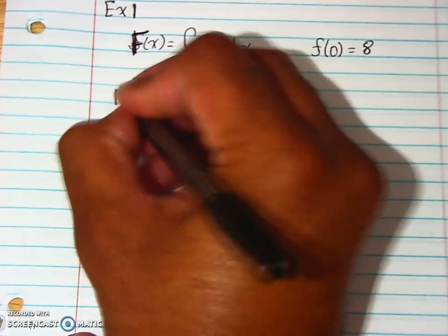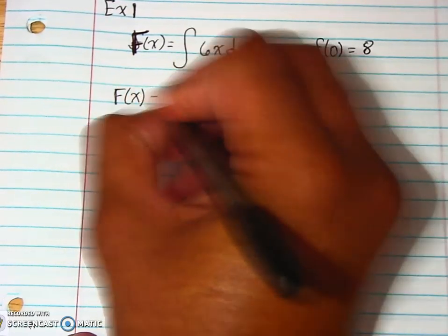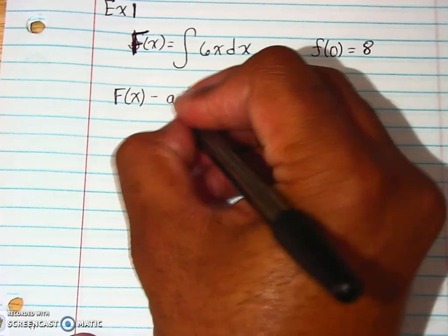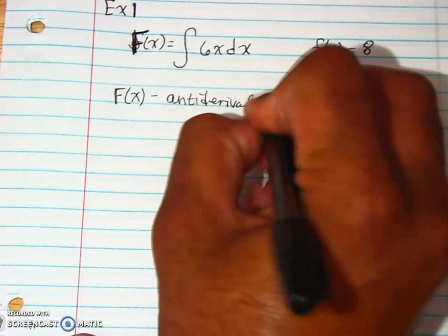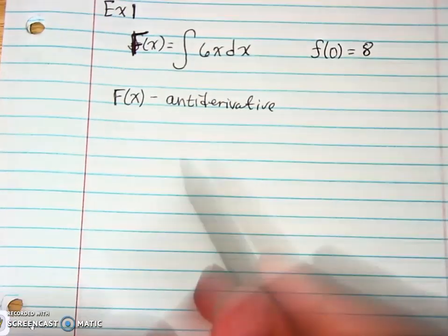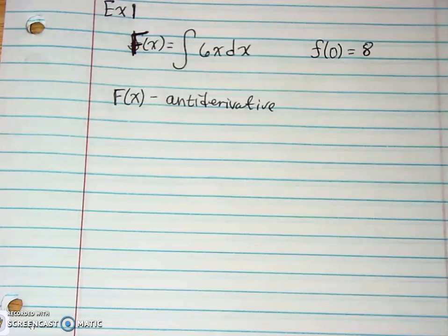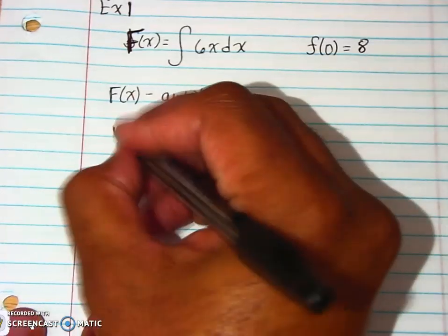And I'm going to write this here, capital F of x or capital G of x, whatever. It's called your antiderivative. So if they give you that symbol of a capital F or a capital G or some of that sort, they want you to already understand that means your antiderivative. So that should have been a capital F when they originally gave it to us, which I don't know why they didn't.